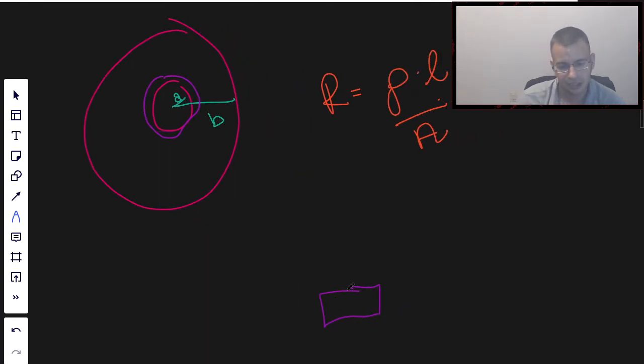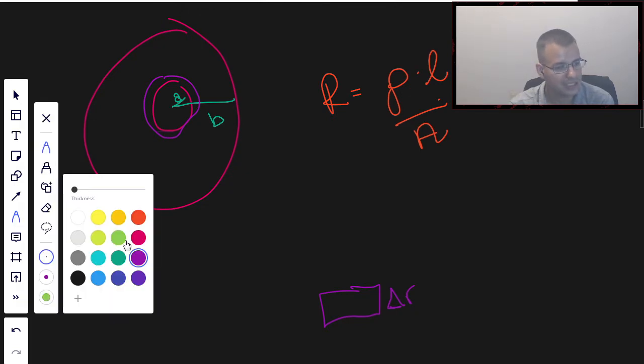And this is going to have a height of delta R, a little thickness, not infinitesimally small, but very small because it's a delta. When I convert it over to a dr, then it'll be infinitesimally small.